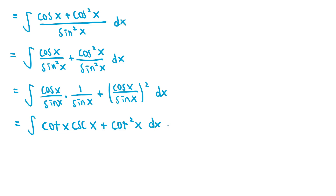Since the integrand is a sum of two terms, we can integrate them separately. The integral of cotangent of x cosecant of x is negative cosecant of x, because the derivative of cosecant of x is negative cotangent of x cosecant of x, which is a standard derivative. Since we're integrating cotangent of x cosecant of x instead of negative cotangent of x cosecant of x, the result is off by a constant multiple of 1, so the result is negative cosecant of x. We also need to add the integral of cotangent squared of x to the result, which I'm going to work out separately.